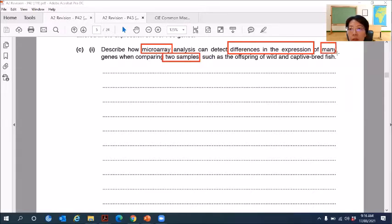Many genes is also a keyword, such as the offspring of the wild and the captive bred fish.